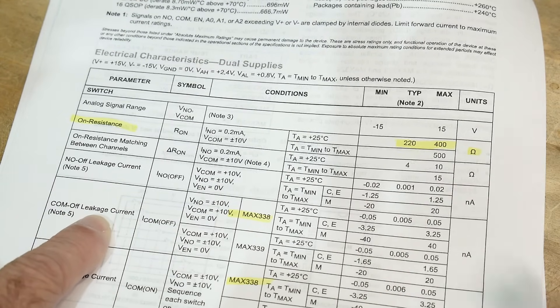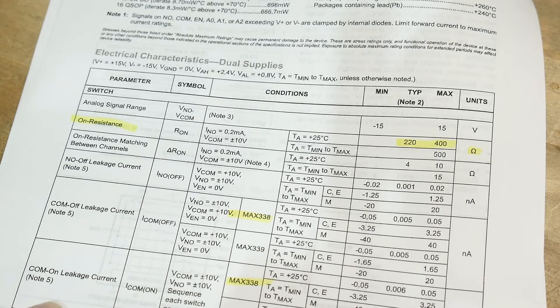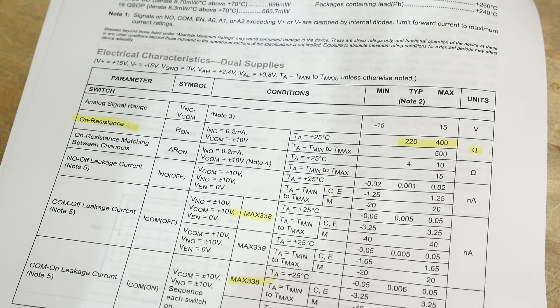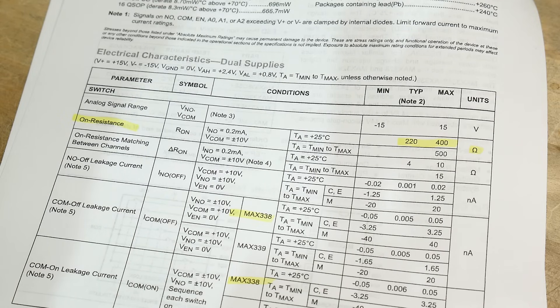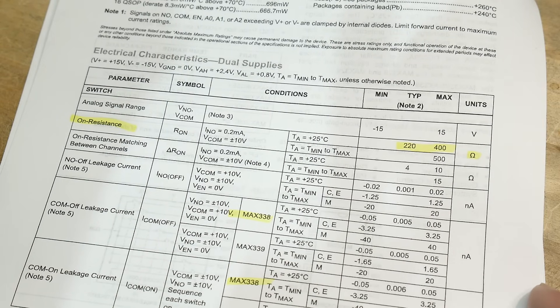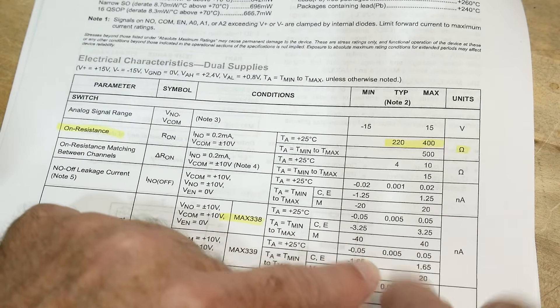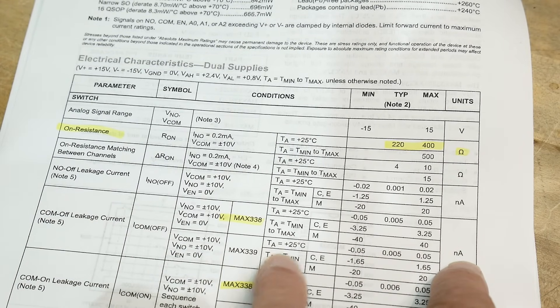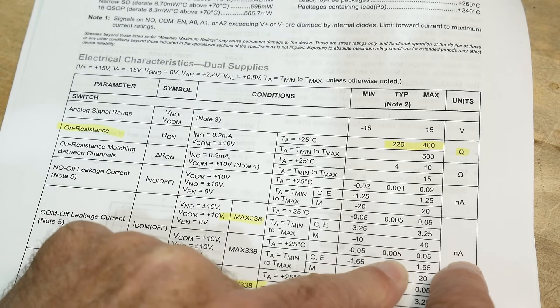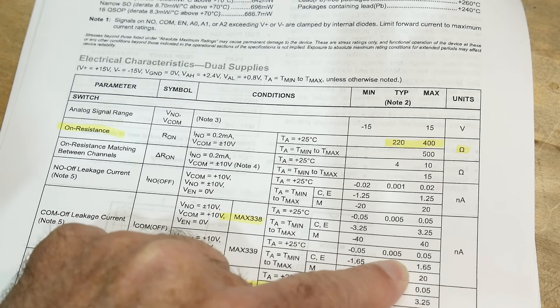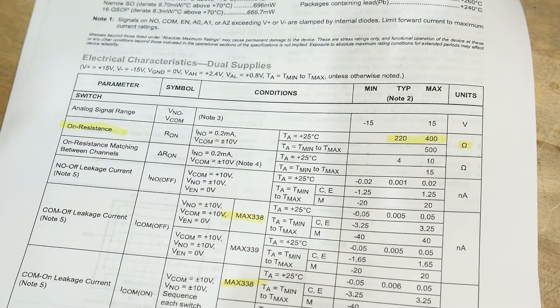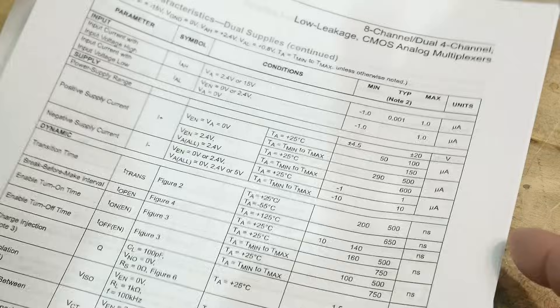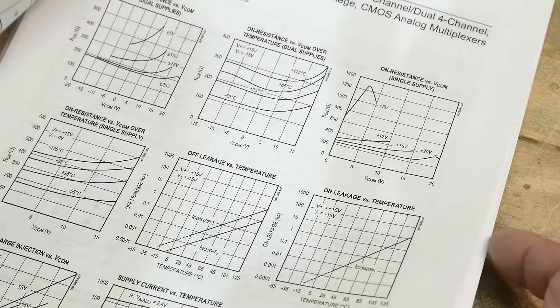Let's see here. Leakage currents, 40 nanoamps. Leakage currents. Yeah, 40 nanoamps. That's pretty small. Oh, wait a minute. Oh, no, no, no, no. It's much, much better than that. I'm sorry. 0.005 nanoamps. Yeah, there we go. There we go at room temperature. 0.005 nanoamps. Yeah, that's pretty small, right? That's 5 picoamps. Yeah, pretty small.